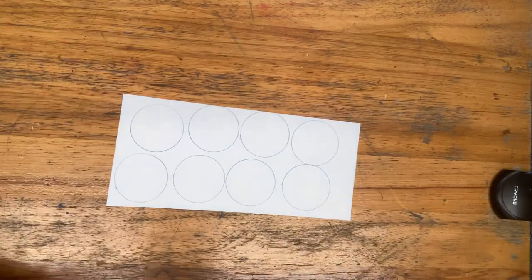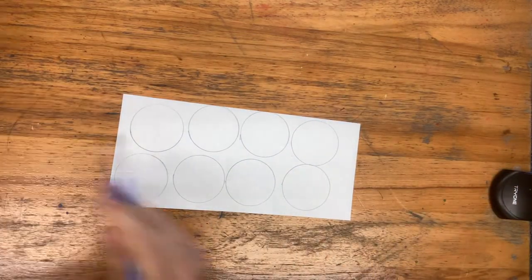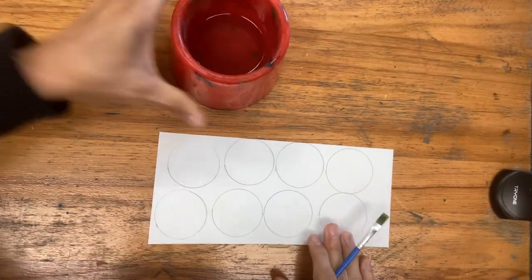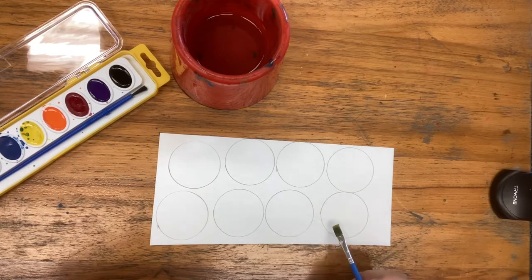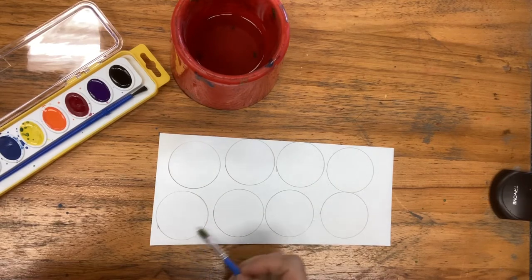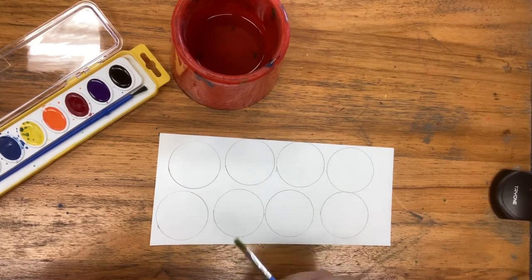All right, now that I've traced my circles I'm going to use my watercolor to paint my gumballs. Now these are pretty big so I'll probably cut on the inside of the circle so they're a little bit smaller when I'm finished.